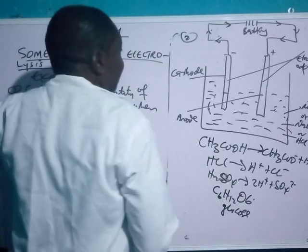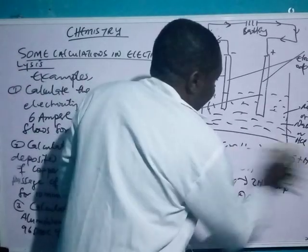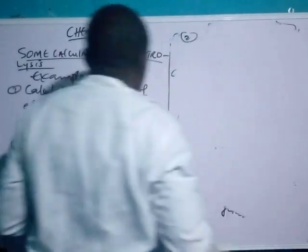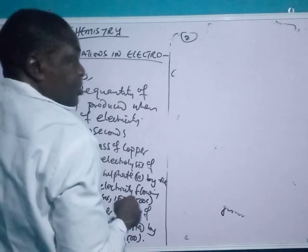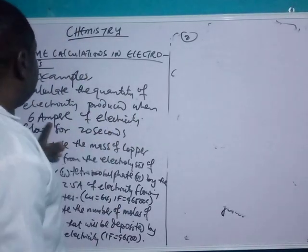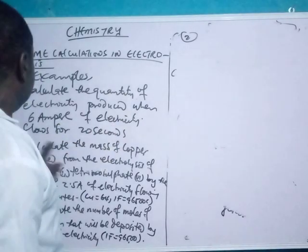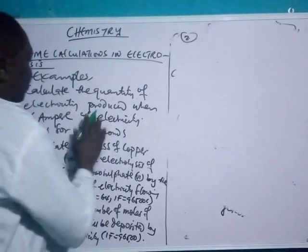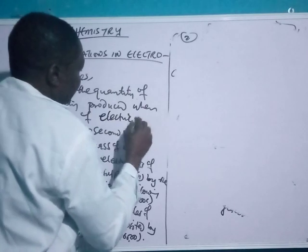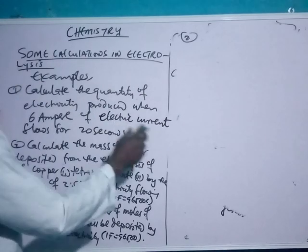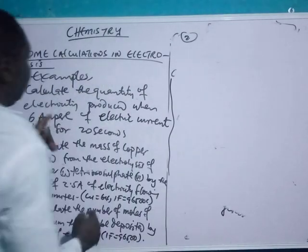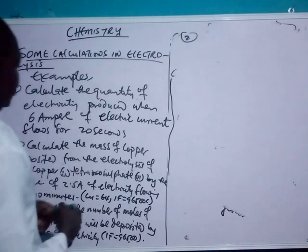The battery and DC supply provide the current to separate the ions. Now let's carry out some calculations involving electrolysis. The first calculation is: calculate the quantity of electricity when 6 amperes of electric current flows for 20 minutes. To carry this out, you may not need to write any form of equation.